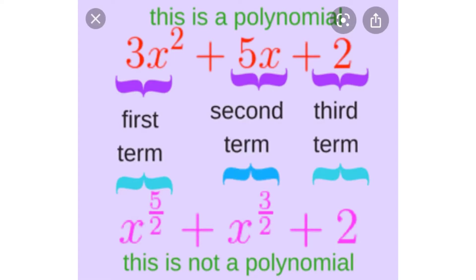Let us check whether two algebraic expressions are polynomials or not. The first one, 3x² + 5x + 2, is a polynomial because the power of x is 2 in 3x², power of x is 1 in 5x, and 2 is a constant. But the second expression, x^(5/2) + x^(3/2) + 2, is not a polynomial because the power of x in the first term is 5/2 and in the second term is 3/2. From the definition, the power of a variable in a polynomial must be a natural number. Keep this in mind — in an exam, an algebraic expression will be given and you must check whether it is a polynomial or not.